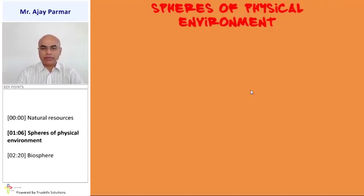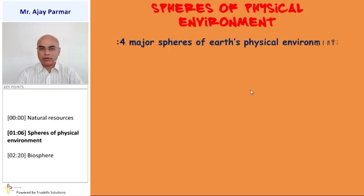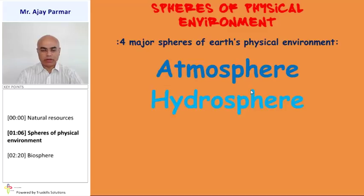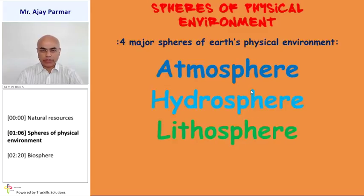The various spheres of physical environment. There are basically four spheres of earth's physical environment: atmosphere, that is the gaseous component; the hydrosphere, that is the water component; lithosphere, the solid component; and lastly, the biosphere, that is the living component.